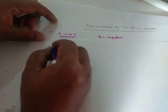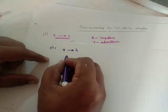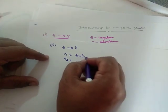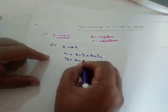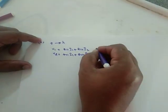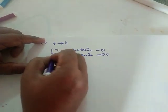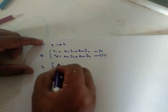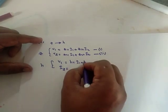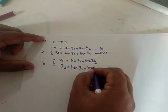Now the second one: Z parameters in terms of H parameters. The Z parameter basic equations are: V1 equals Z11 I1 plus Z12 I2, and V2 equals Z21 I1 plus Z22 I2. Similarly, the H parameter basic equations are: V1 equals H11 I1 plus H12 V2, and I2 equals H21 I1 plus H22 V2.